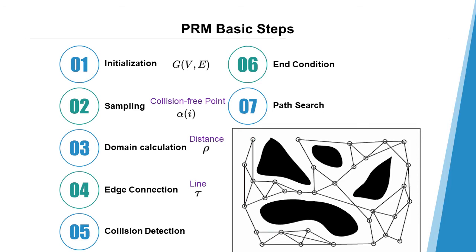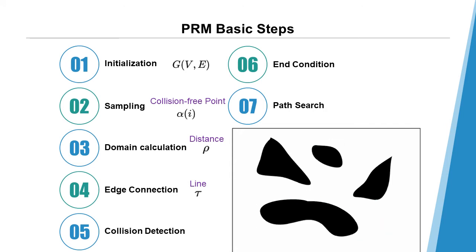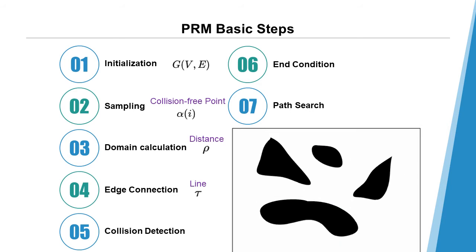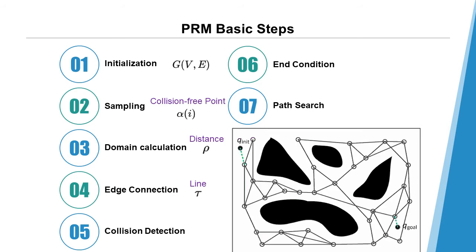Four, edge connection. We connect alpha i with its neighborhood points and generate a line tau. And five, collision detection. If tau doesn't collide with the obstacles, add it to the connection set E.